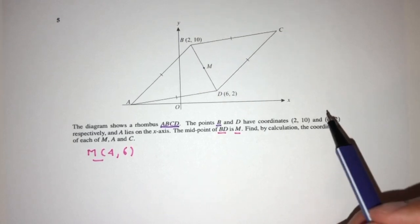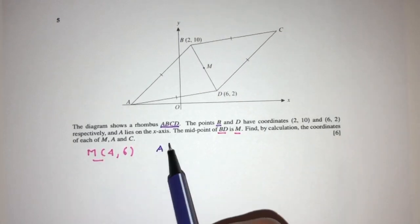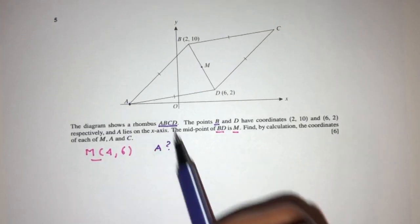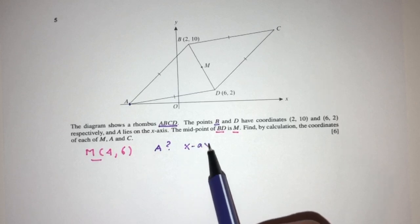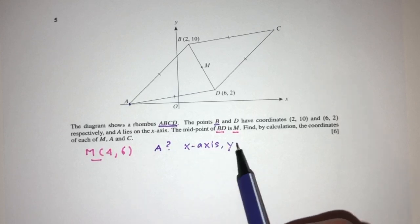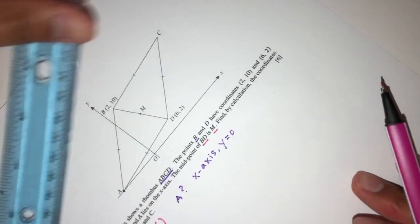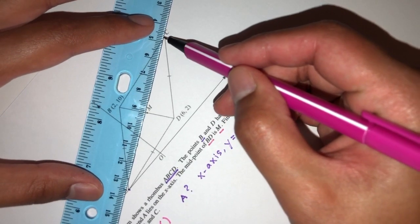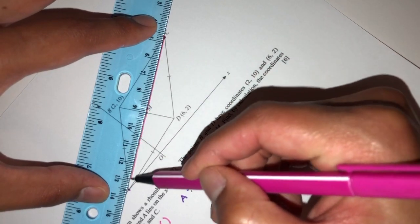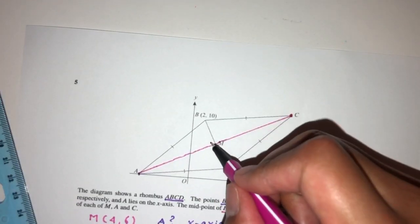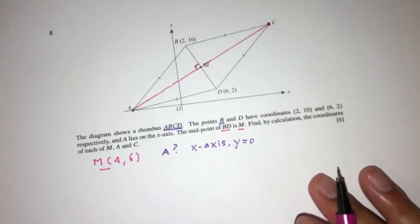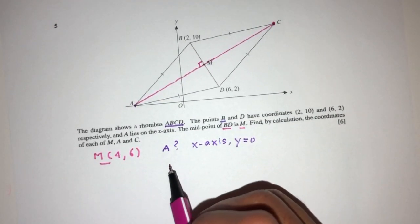Okay, so now next thing, we have to find the point A. How can you find A? As you can see, A is on the X-axis. On the X-axis, we know the value of Y will be 0. But anyways, the main thing here we have to understand is that if you were to join the points A, M, C, it's a straight line at 90 degrees to the line B, D. So we have to first find the equation of the line A, M.